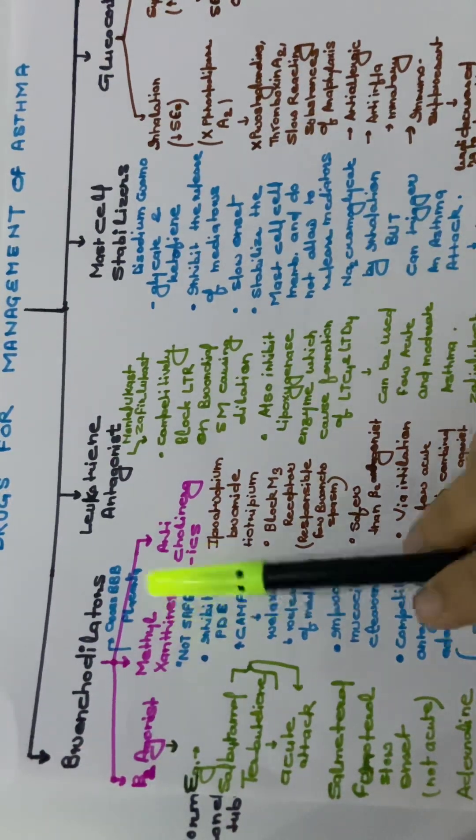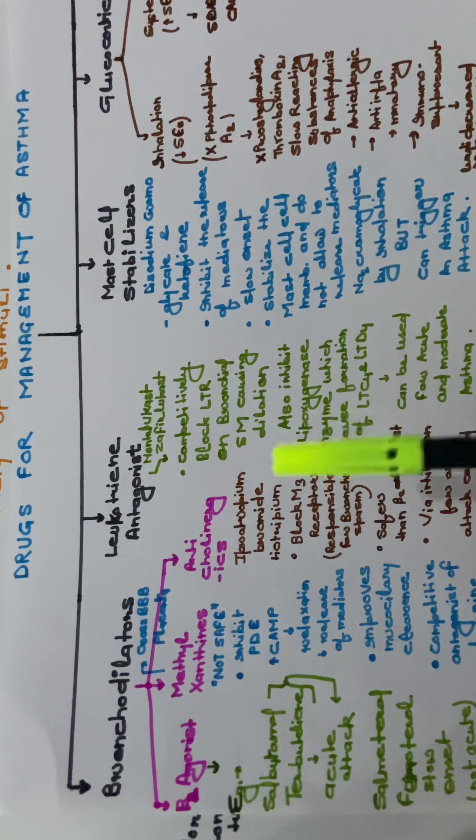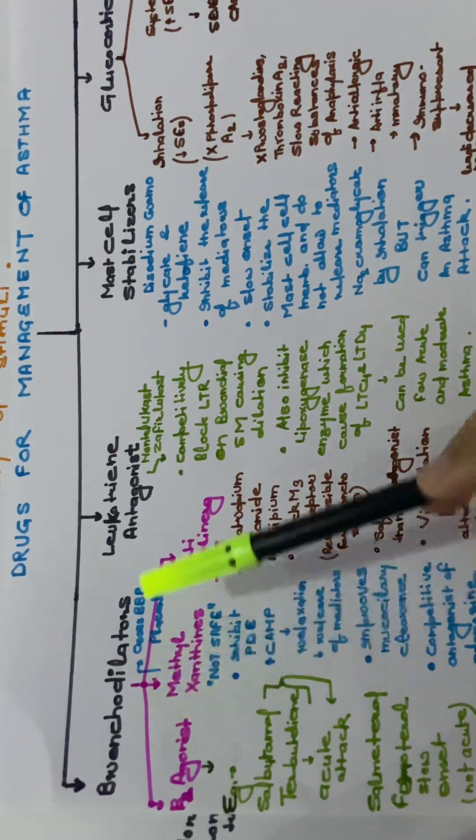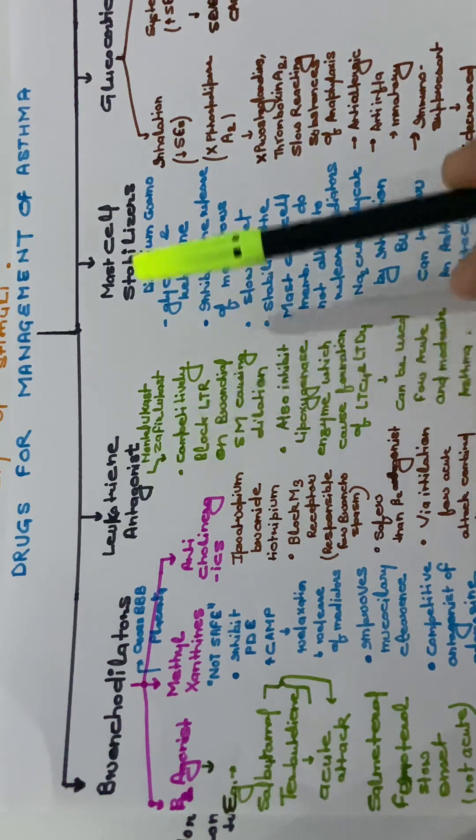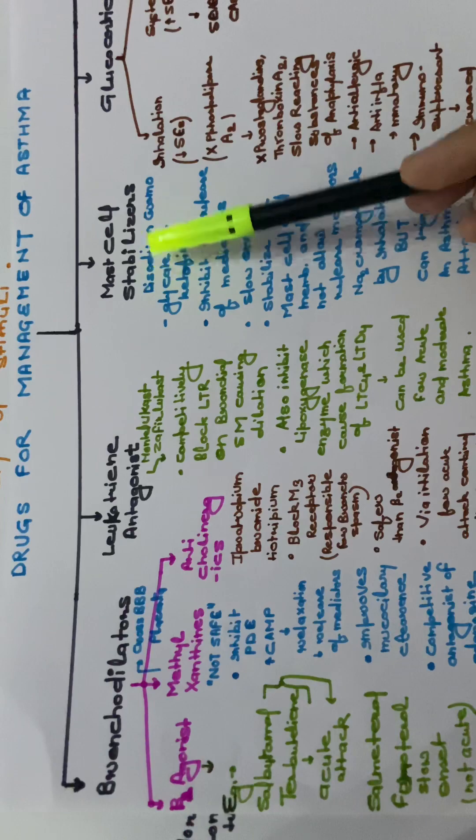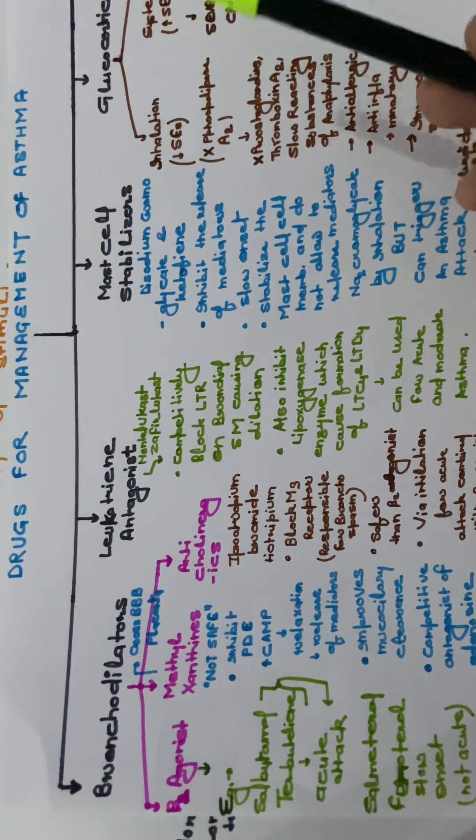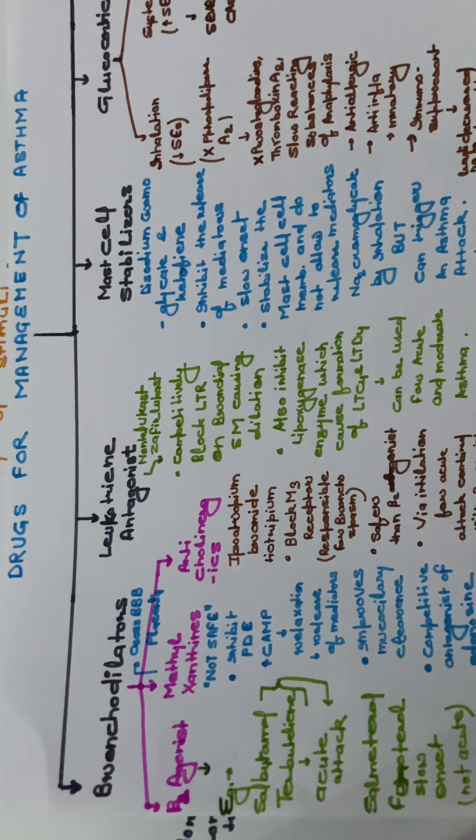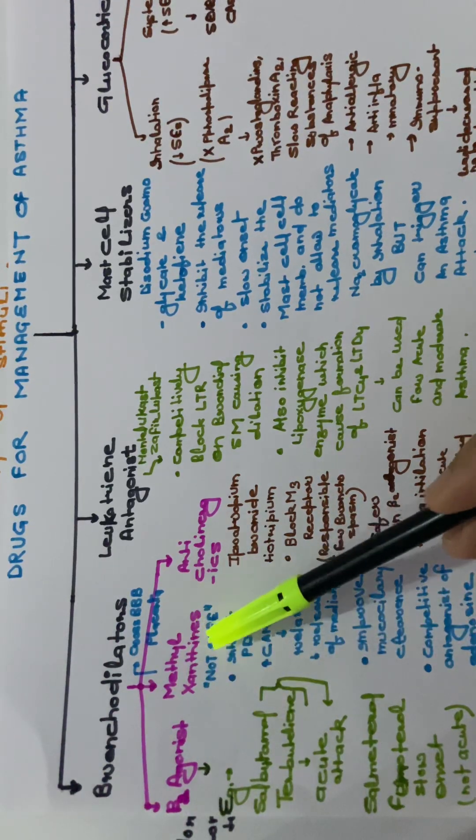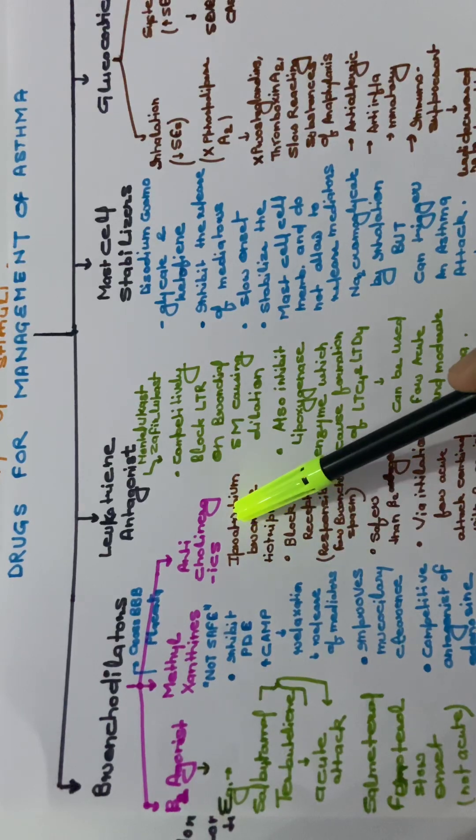The classification of the drugs for management of asthma are: bronchodilators, leukotriene antagonist, mast cell stabilizers, glucocorticoids, anti-IgE antibody. Bronchodilators are of three types: beta-2 agonist, methylxanthines, anticholinergics.